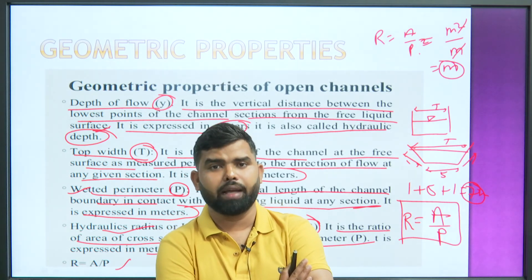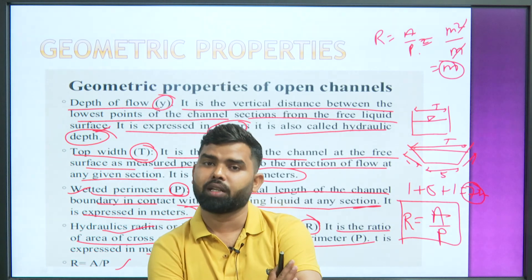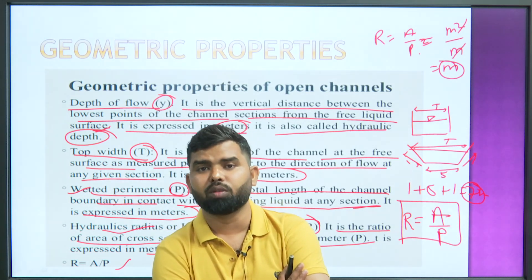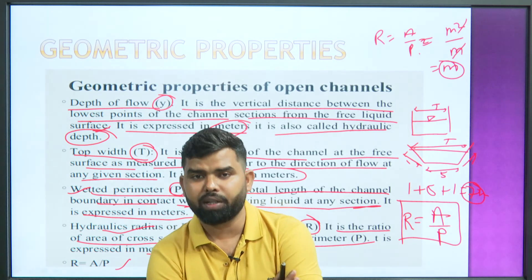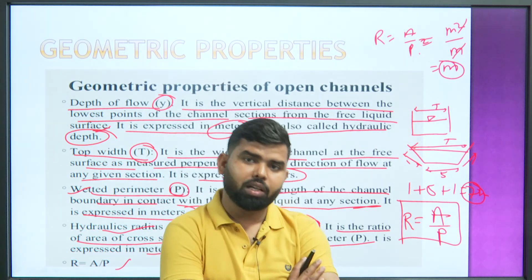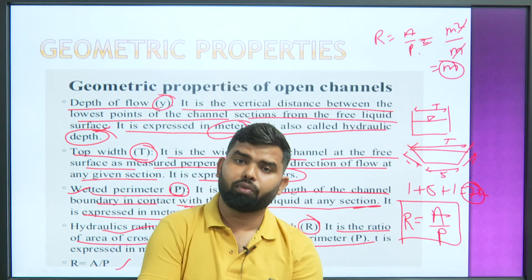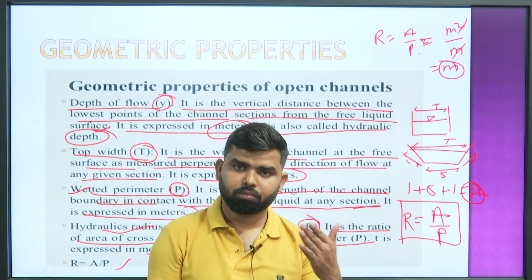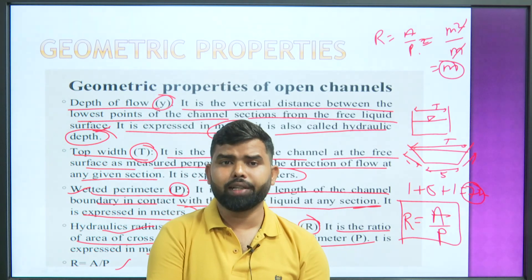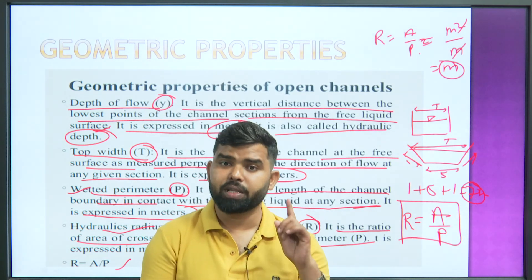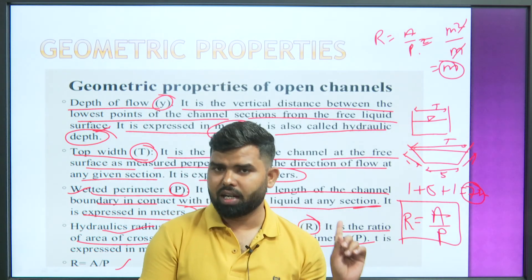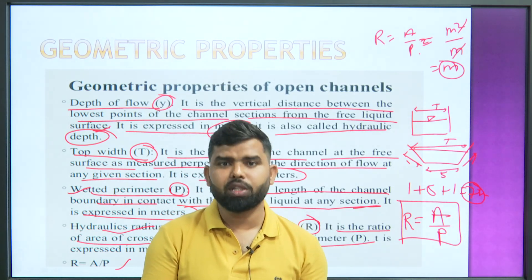To calculate hydraulic mean radius: we know that for a rectangular section, area = length × width and perimeter is the total wetted boundary in contact with water flow. So hydraulic mean radius R = A/P. This is the most important term — R will be used very frequently in open channel flow calculations.